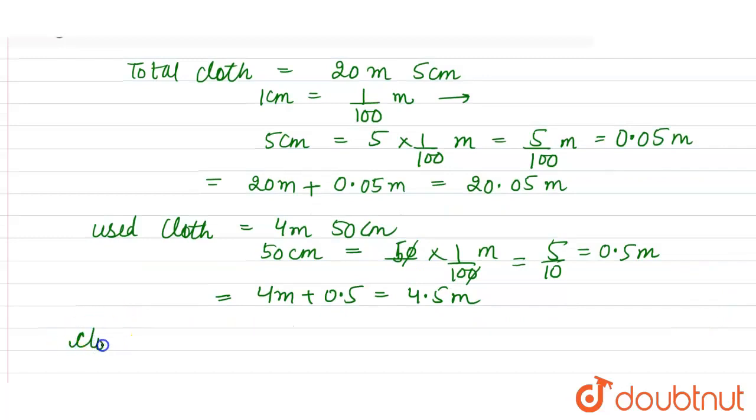So cloth she has right now is total cloth, that is 20.05 meter, minus the cloth she has used, that is 4.5 meter.